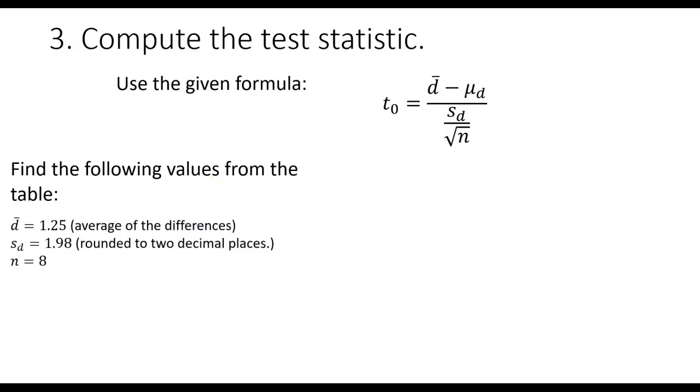So we find the average of the differences to be 1.25. Using your formula of finding the standard deviation of a sample, we'll find the standard deviation to be 1.98, rounded to two decimal places. And we have eight different patients, so our sample size is eight.